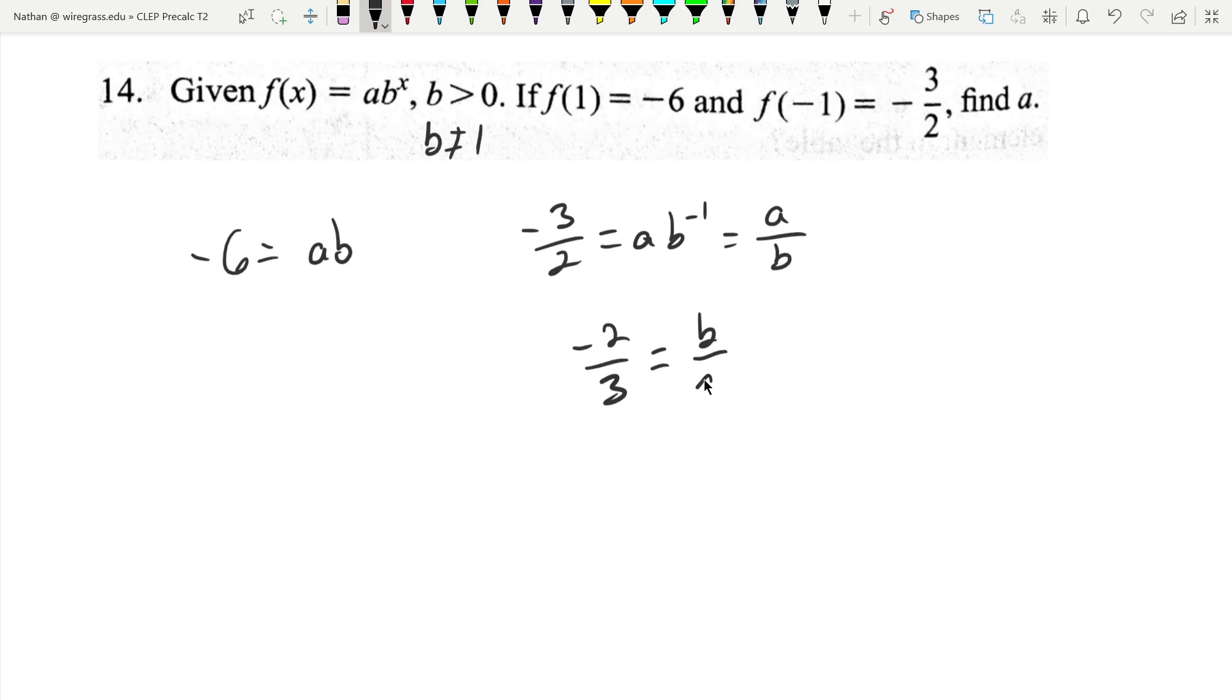Equals b over a. I'm just flipping both of these things and multiplying by a. I get b equals negative two-thirds times a. Plugging that into this equation, I get negative six equals...